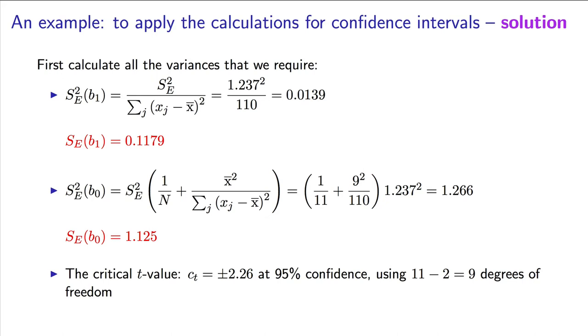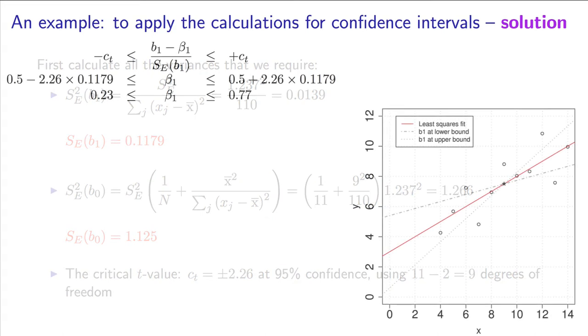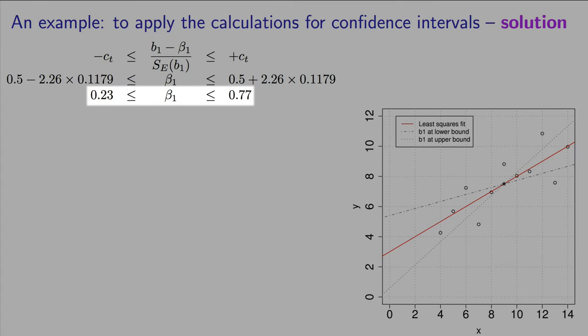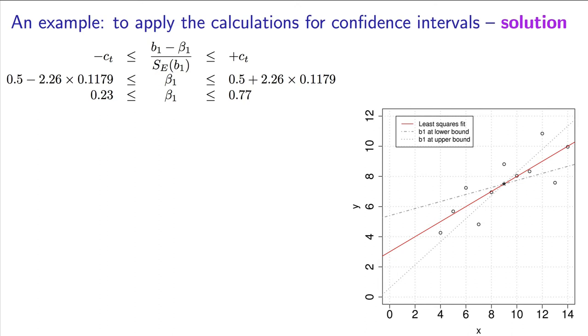It is important to interpret what that confidence interval for beta 0 and beta 1 is. Let's take a look at the case for beta 1 first. You will recall that confidence intervals give us a probable range within which we expect to find the true value of the parameter. Here I've illustrated the least squares fit line in red. We will never know our true slope value. But we do know that the bound between 0.23 and 0.77 over here are probable ranges for that slope.